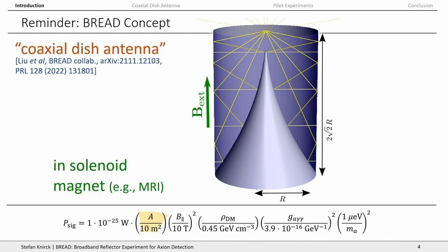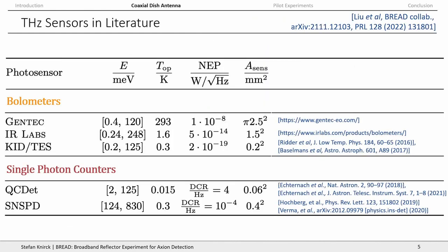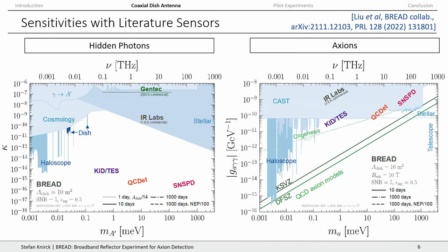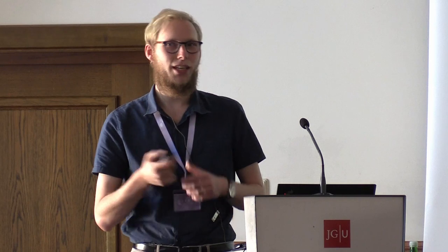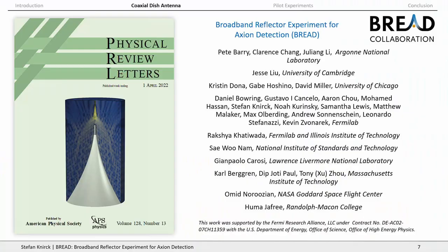We did a lot of calculations on feasibility, looking at various detectors in the millielectron-volt range — bolometers and single photon counters — and you can calculate sensitivities for all these sensors. If you look at our paper, you'll find that you can actually probe down to the QCD axion band in this region, which is really nice. We published this and decided to try PRL — and we ended up on the title page of PRL. This is a simulation of our setup in the RF regime, which gives us even more motivation to make this experiment real.